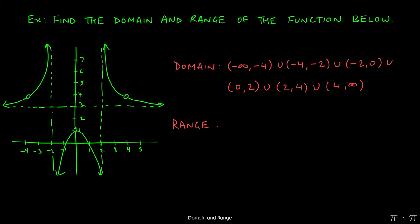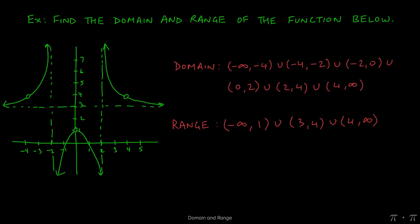The range also needs to be tweaked. We still start at negative infinity and climb to one, excluding one. Then we see a gap, and north of three things change: the y value of four is never hit on either the left side or the right side of the graph. So we have all y values from three to four included, but four itself is excluded. Past four there's no problem — all y values from four to infinity are hit. So our range is negative infinity to one, union three to four, union four to infinity, with one and four excluded.